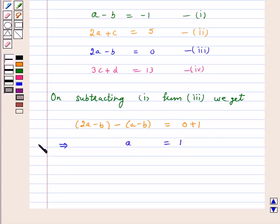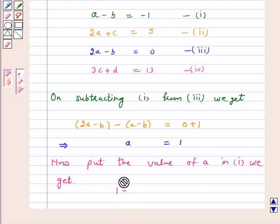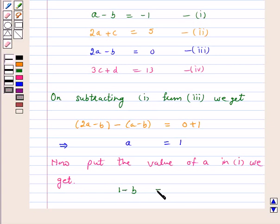Now, put the value of A in equation 1. We get 1 minus B is equal to minus 1, which implies B is equal to 2.